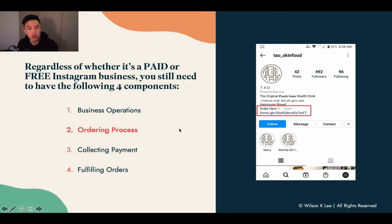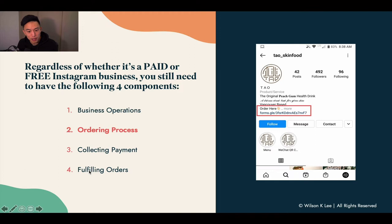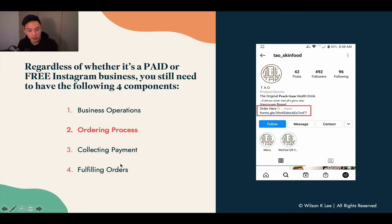Regardless of whether you are using a paid or free Instagram business, the four components still hold true: the business operations, the ordering process, how you collect payment, and fulfillment of orders. Regardless of whether you want a free Instagram food business account or a paid one, you still need these items.